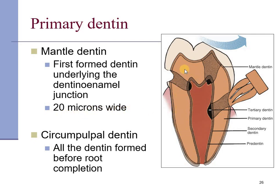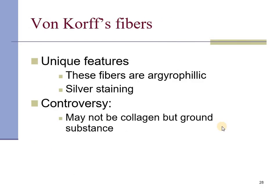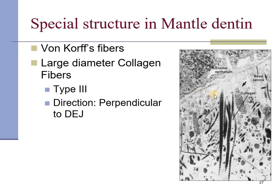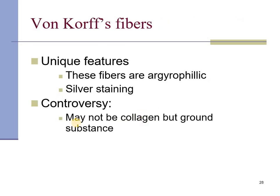Around the pulp, you see the circumpulpal dentine. These are unique argyrophilic fibers which characteristically show silver staining. They show characteristic bands and are thought to be type 3 collagen, directed perpendicular to the dentino-enamel junction. However, whether they are or are not collagen remains a subject of controversy.